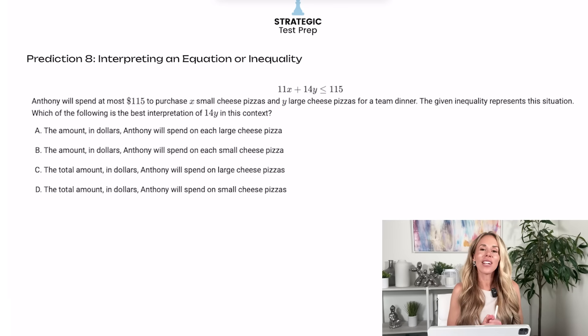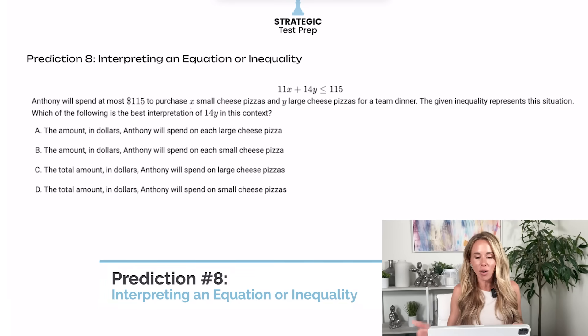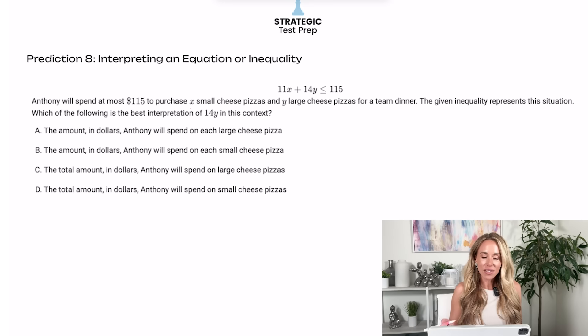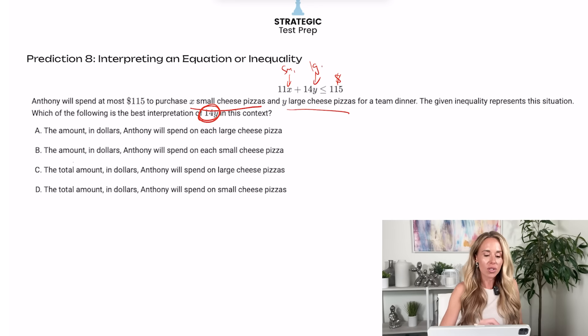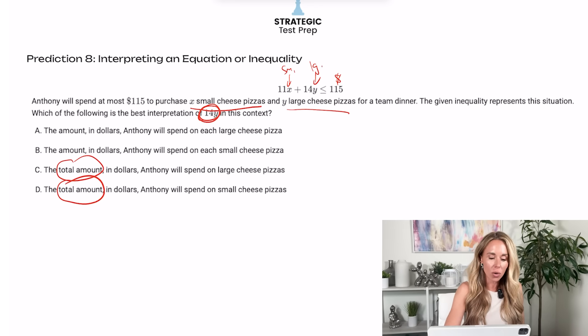Prediction eight. I think you're going to have an interpreting an equation or an inequality question. So basically they said X is small cheese pizzas. By the way, the 115 is dollars. So that's small cheese pizzas. Y is large cheese pizzas. And then they want to know what is the best interpretation of 14Y. They want you to interpret an entire term. They're not asking for just the 14 or just the Y. They're asking for the entire term 14Y. So you're going to pick something that says total. And then essentially because the Y deals with large cheese pizzas, go with C.